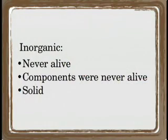Let's start off with the definition of a mineral. A mineral is a naturally occurring, inorganic solid. Naturally occurring means that it occurs in nature. Inorganic means that it was never alive, nor is it made of anything that was ever alive. And of course, it is a solid.